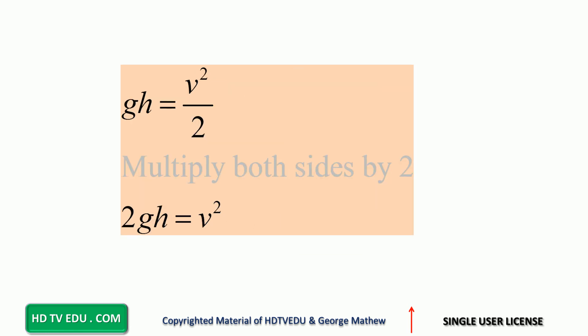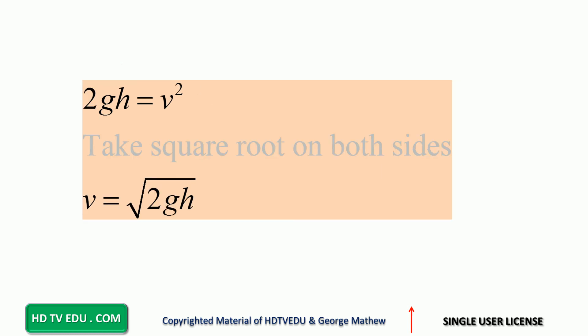We have division by 2, multiply both sides by 2, and then take square root, because square of the speed is 2GH. So we have to take square root.